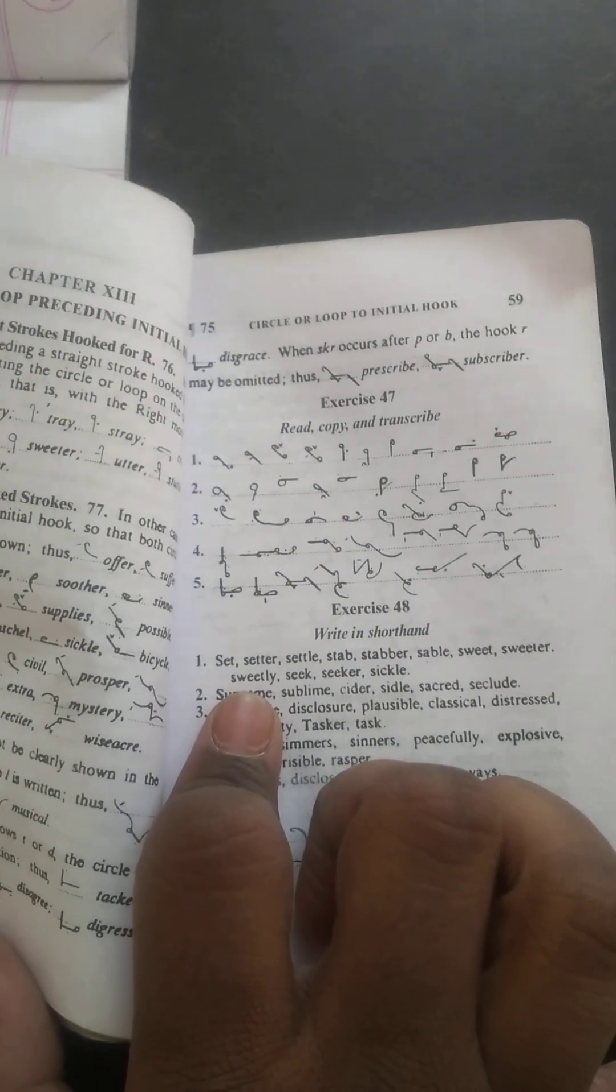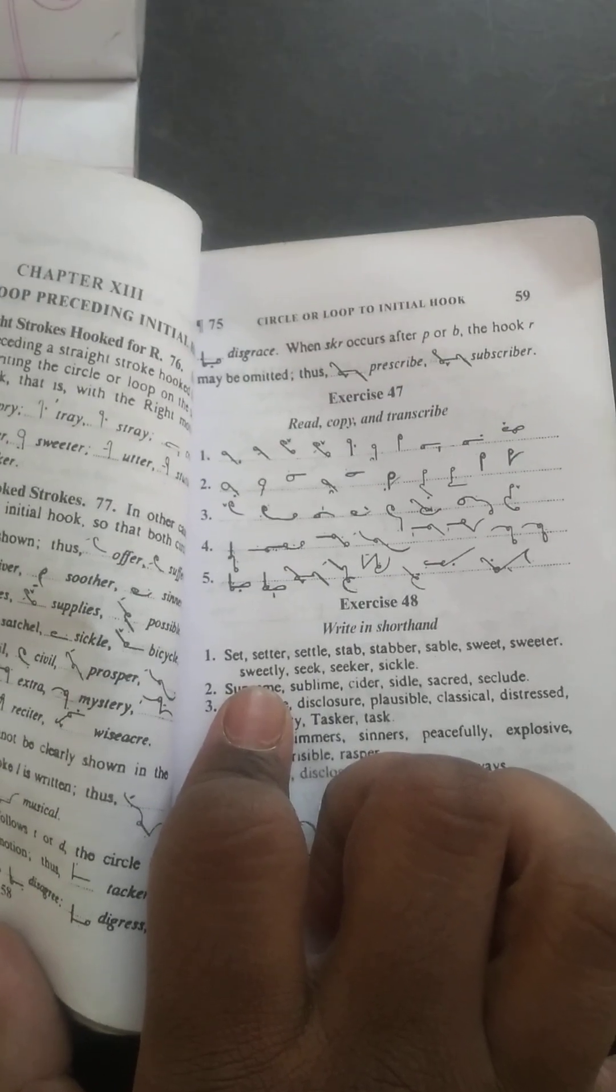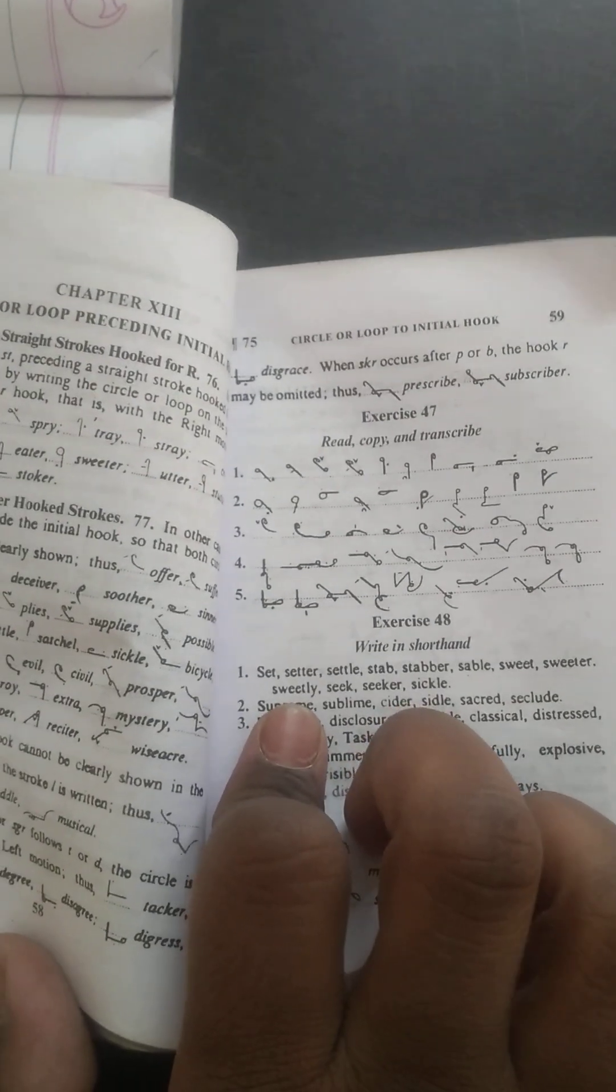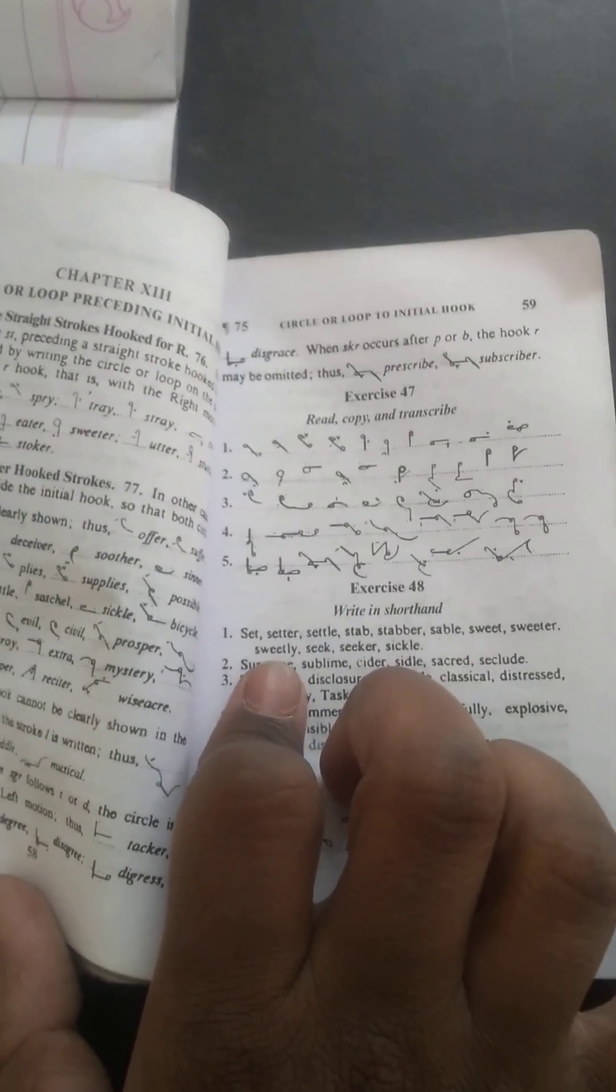When SKR occurs after P or B, the circle is written with the right motion. Subscribe. This is the main important thing.